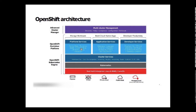On top of the cluster services, there are different types of services running: platform services, application services, and developer services. Platform services provide service mesh and CI/CD pipelines to manage workloads. Application services allow you to build cloud-native applications, and developer services help improve developer productivity. All four layers together are called the OpenShift Container Platform.